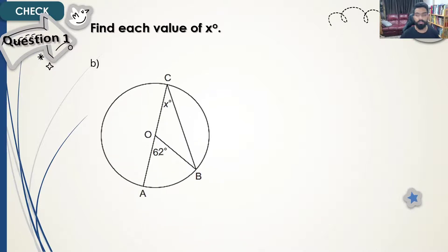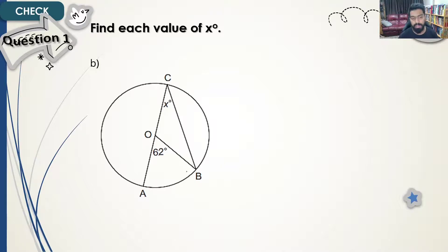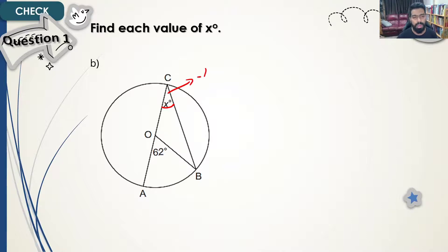For question 2, there is more than one way of solving it. We see that angle AOB is the central angle and angle ACB, which is angle x, is the inscribed angle. Therefore, angle x equals half of 62 degrees, which is 31 degrees. That's the quick method.